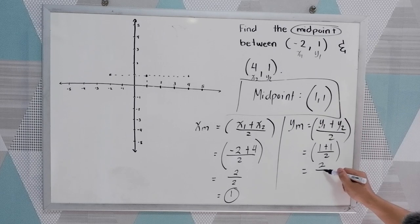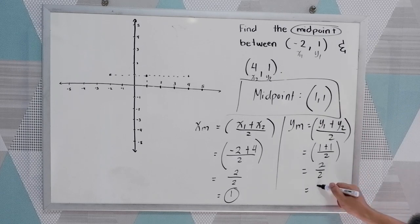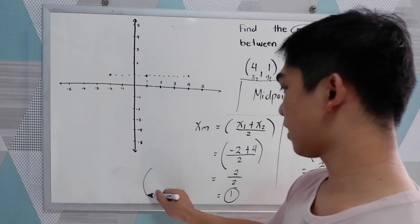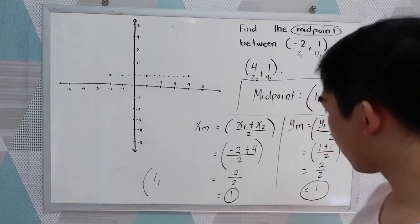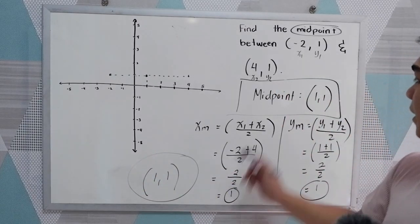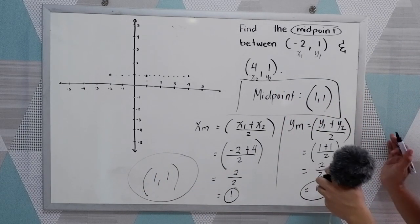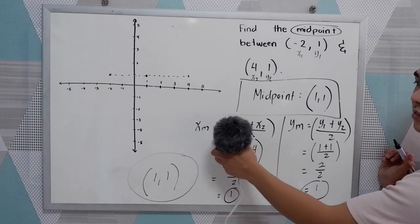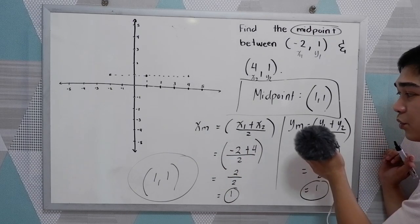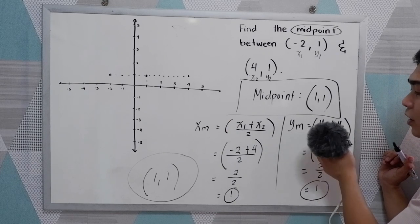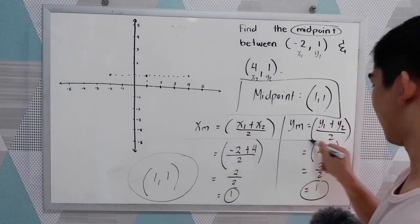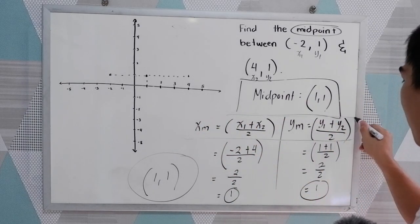1 plus 1 is 2 over 2. 2 divided by 2 is 1. So our midpoint for x is 1 and for y is 1. So take note: our formula for the midpoint of x is x sub 1 plus x sub 2 all over 2, and for the y midpoint, y sub 1 plus y sub 2 all over 2. Don't forget the formulas.